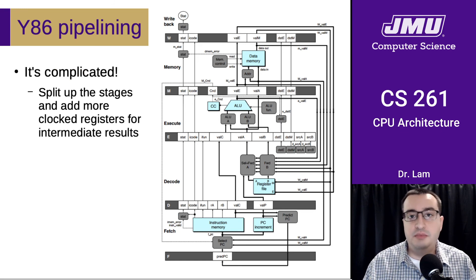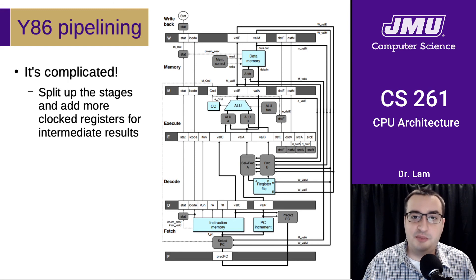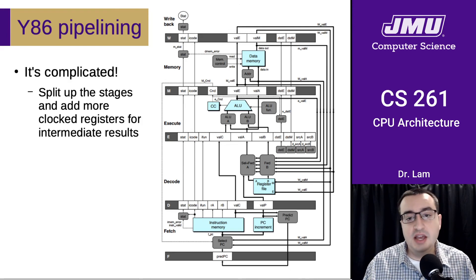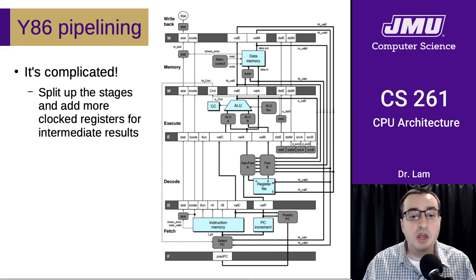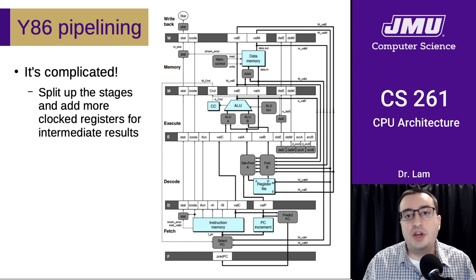The other cost is that pipelining makes our CPUs significantly more complicated. Even the original sequential CPU designed for Y86 was pretty complicated, but the pipelined one is even more so — we've had to split everything up very carefully and add new clocked registers, with many new things to account for. That's the other cost of pipelining: increased complexity. We are not going to look at the details of the pipeline implementation in this course, but the textbook covers it fairly extensively if you are interested.